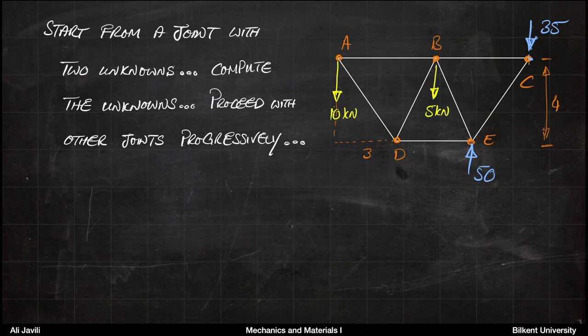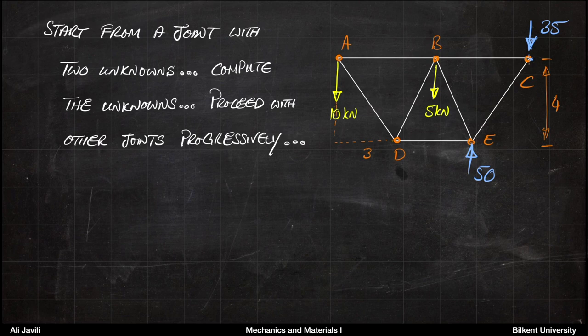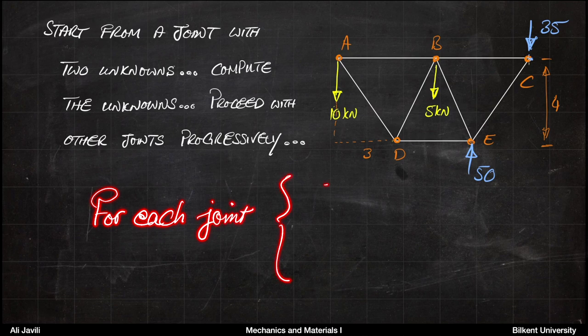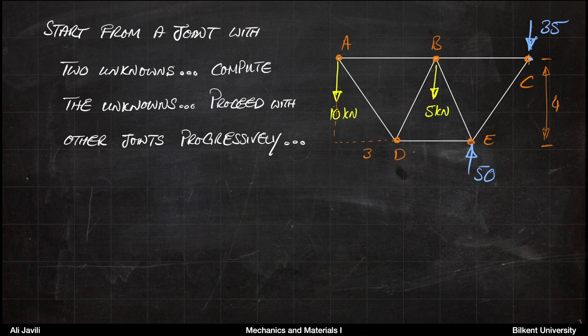Now we need to split the structure joint by joint and solve for each member. We start from a joint with two unknowns, compute those, then proceed to any other joint that also has two unknowns — since each joint gives only two equations. We keep working progressively through the structure until all member forces are found.